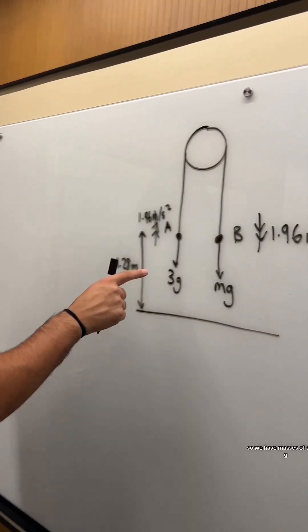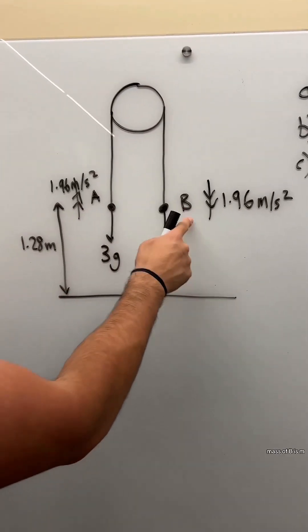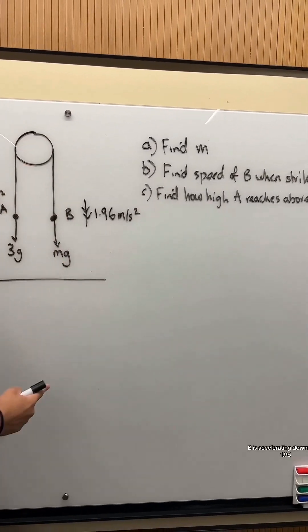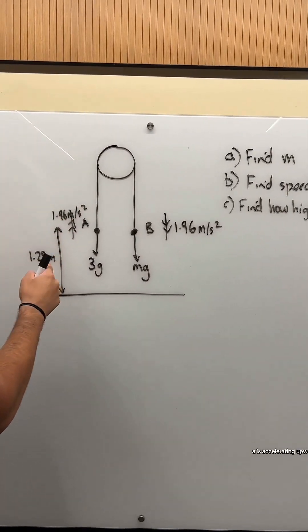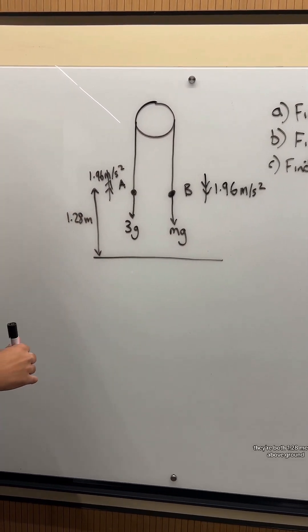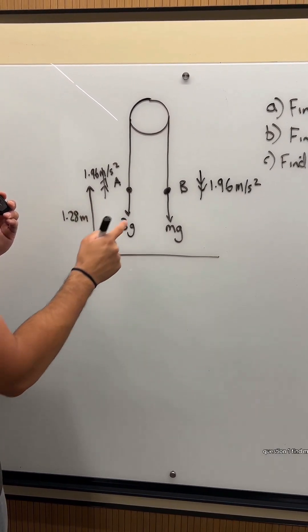Vertical pulleys this time. We have mass of A is 3 kg, mass of B is M. B is accelerating downwards at 1.96, A is accelerating upwards. It's an extensible string. They're both 1.28 meters above ground. Question 1: find M.